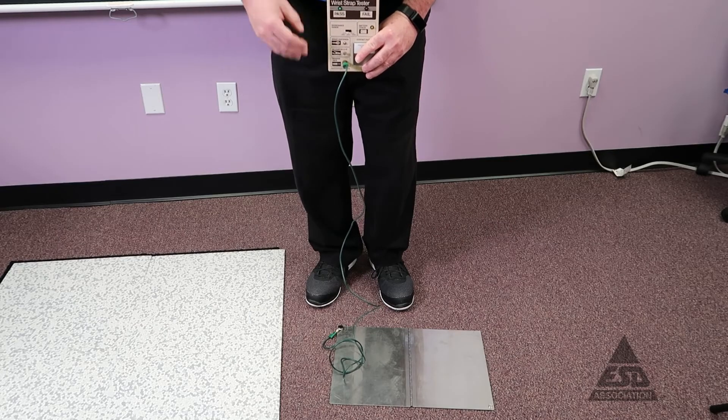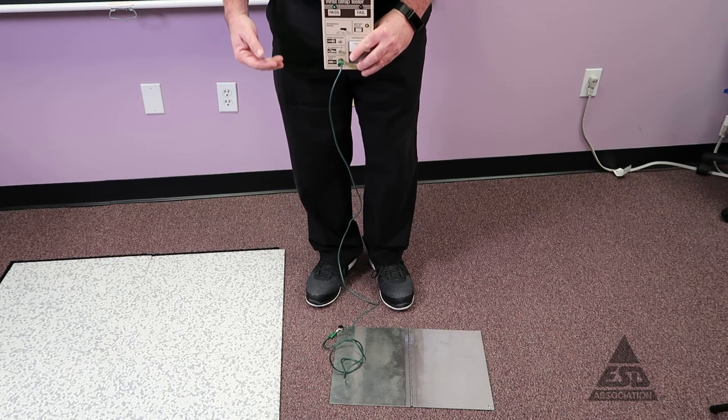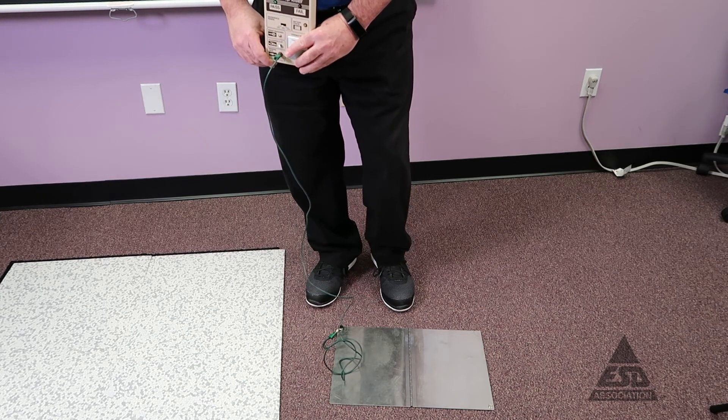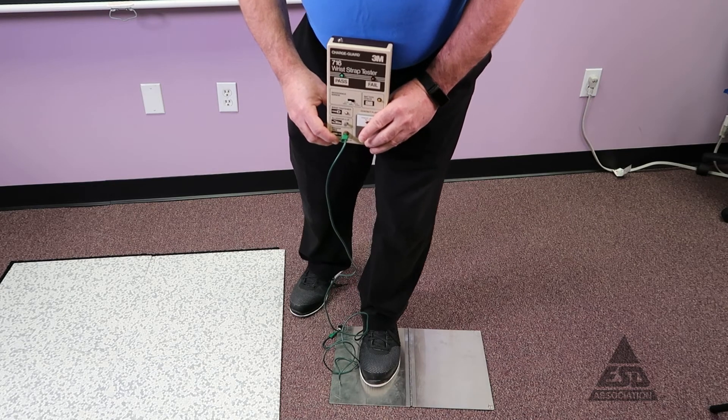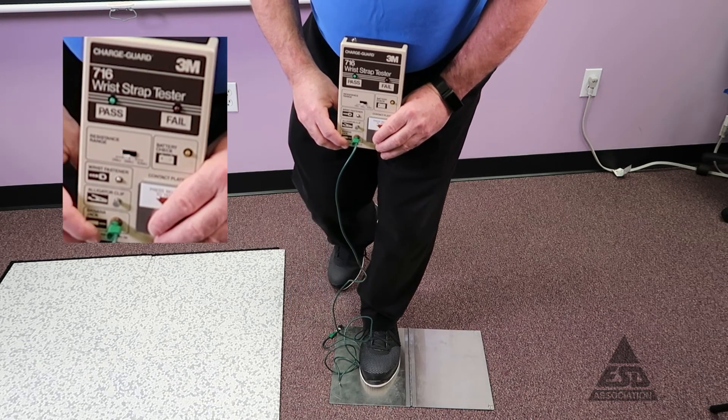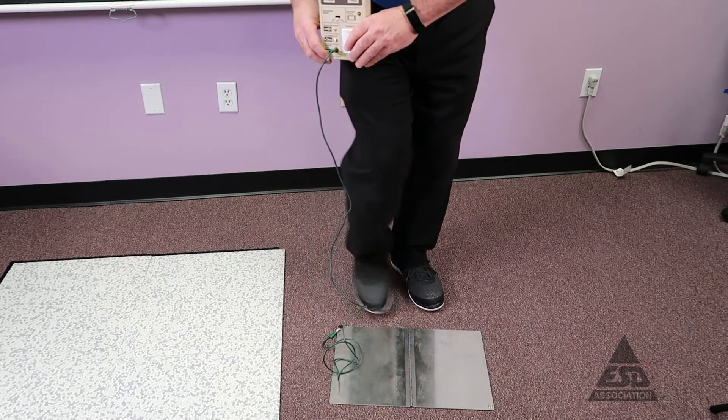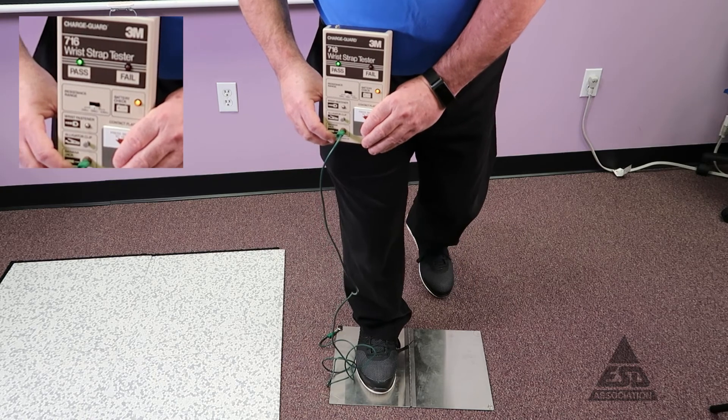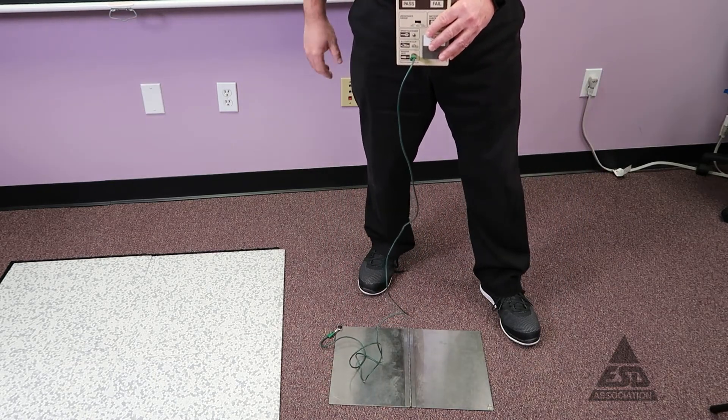Now we're going to test our footwear to make sure that's working. In this case, I have two ESD control shoes on that I will be using on ESD control floor. I have a metal plate connected to a tester. Simply step on the plate with one foot. I get a pass. Step on the plate with the other foot, and I get a pass. So we're good. Now I can use these on our ESD control floors.